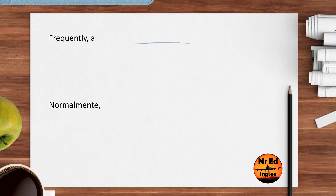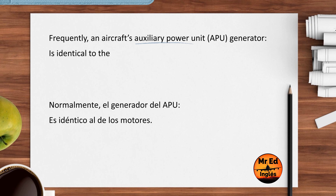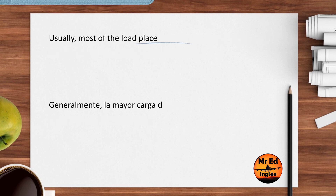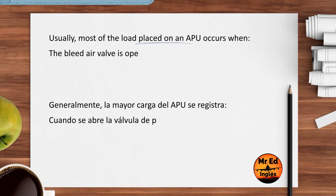Frequently, an aircraft's auxiliary power unit generator is identical to the engine-driven generators. Usually, most of the load placed on an APU occurs when the bleeder valve is opened.